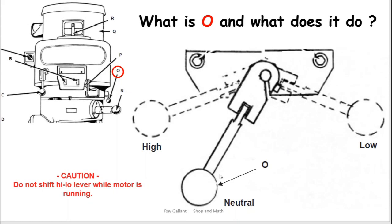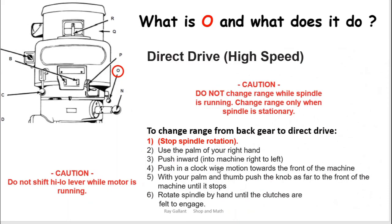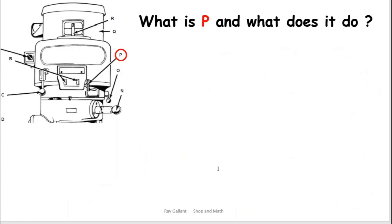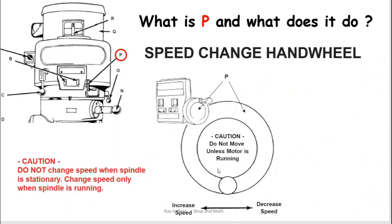P: your speed change. Do not change the speed when the machine is not running. If you try and turn it and pull on it, it puts a small dent in the tapered belt that drives the machine and within a week that belt's kind of junked. Please do not try and adjust the speed when the machine is not running. Spindle must be rotating.